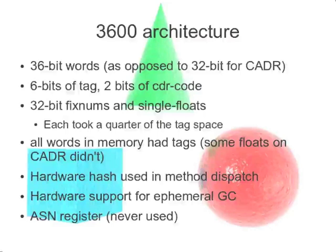There was also support for an address space number register — essentially another eight bits tacked onto the virtual address. All the software on a Lisp machine was in one address space, including all operating system routines, device drivers, the compiler, and your own code — everything in one address space, which made it easy to share data among processes. One customer wanted to be able to separate address spaces and almost demanded that we add this register — they were going to write the software to support it. They never did, we never did, and it got dropped from later architectures.